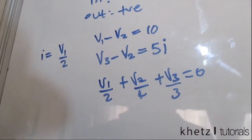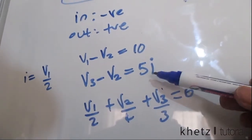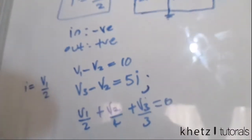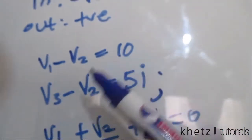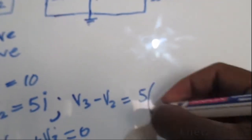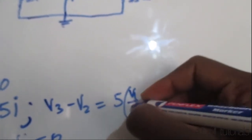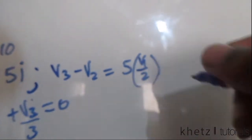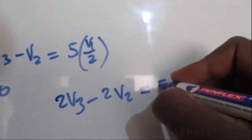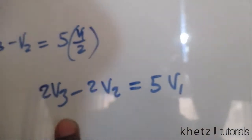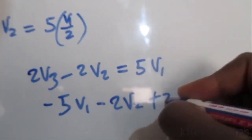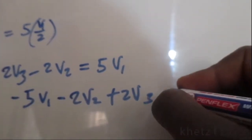Now let's simplify the equations. Equation one is V1 minus V2 equals 10. For equation two, we substitute i equals V1 over 2 into V3 minus V2 equals 5i, giving V3 minus V2 equals 5V1 over 2. Multiplying through by 2 gives 2V3 minus 2V2 equals 5V1, which rearranges to negative 5V1 minus 2V2 plus 2V3 equals 0.